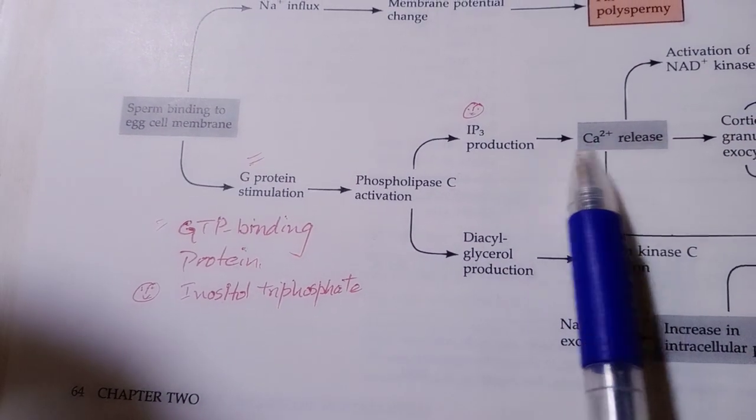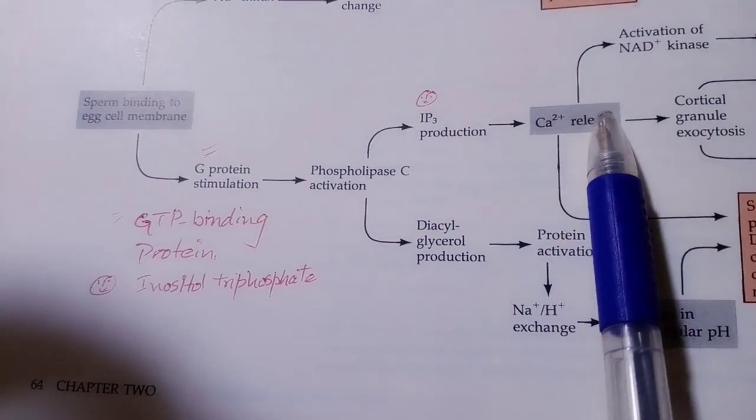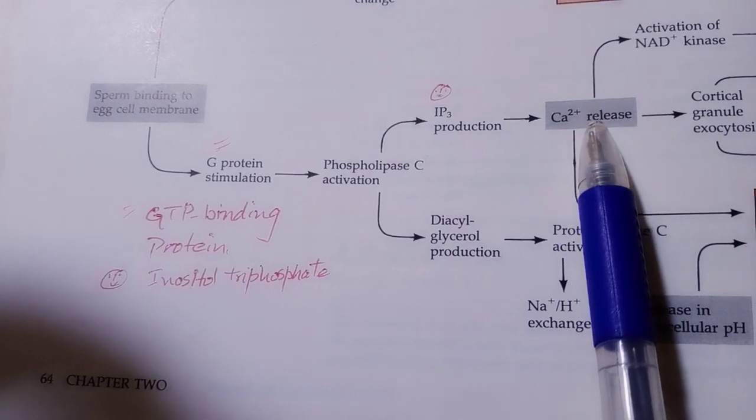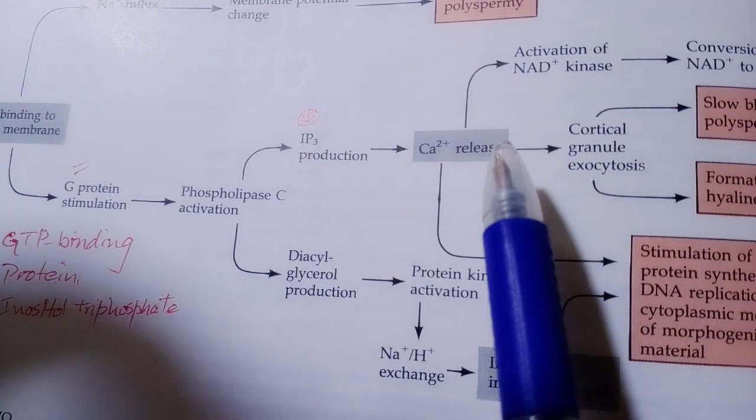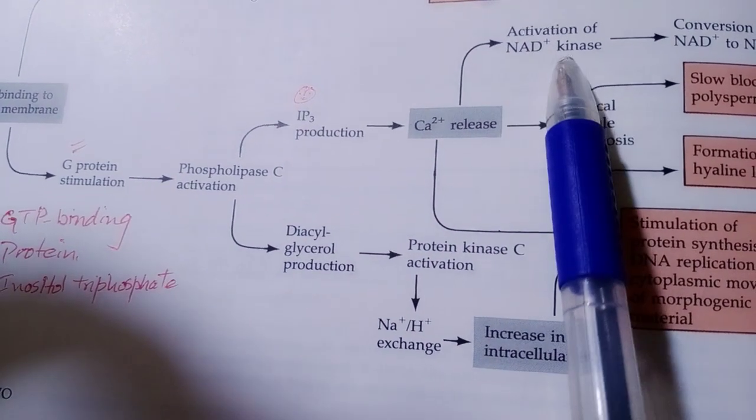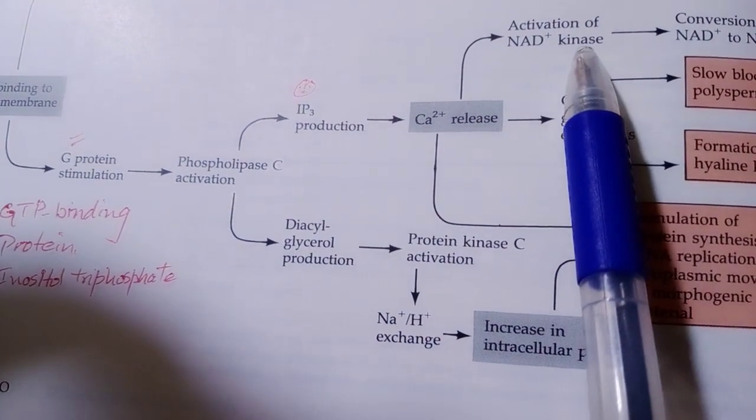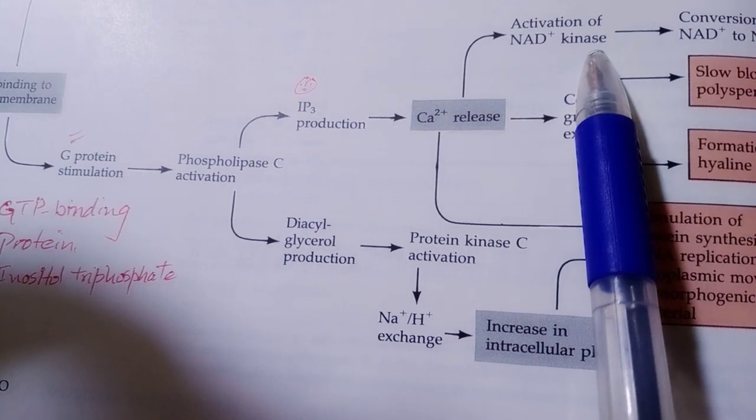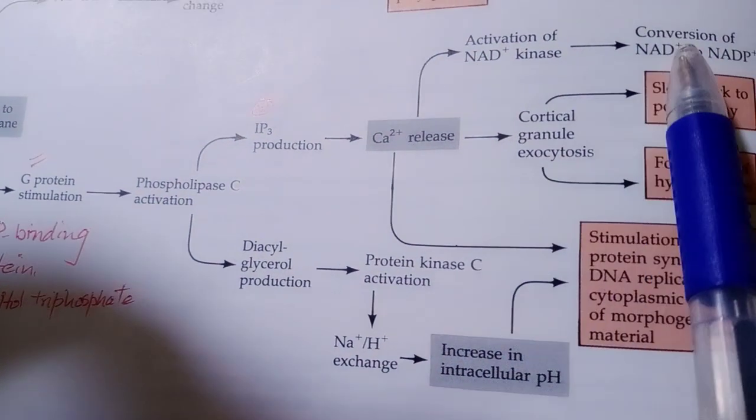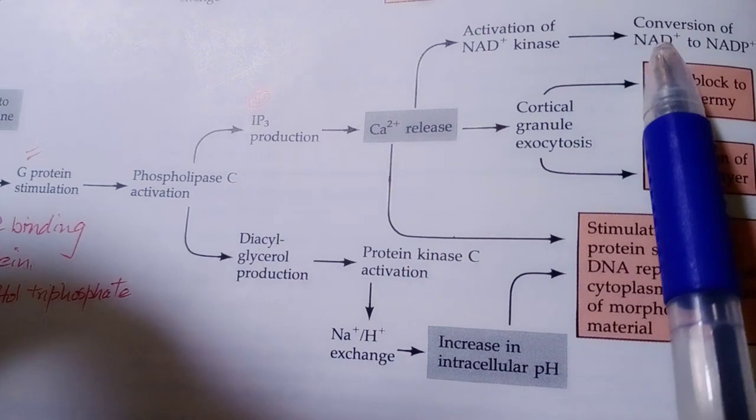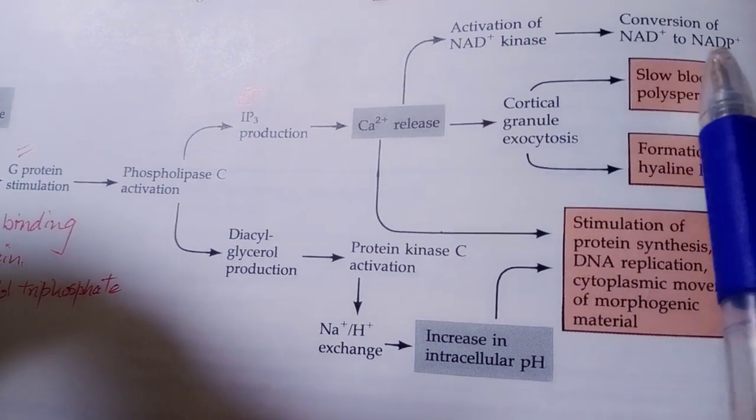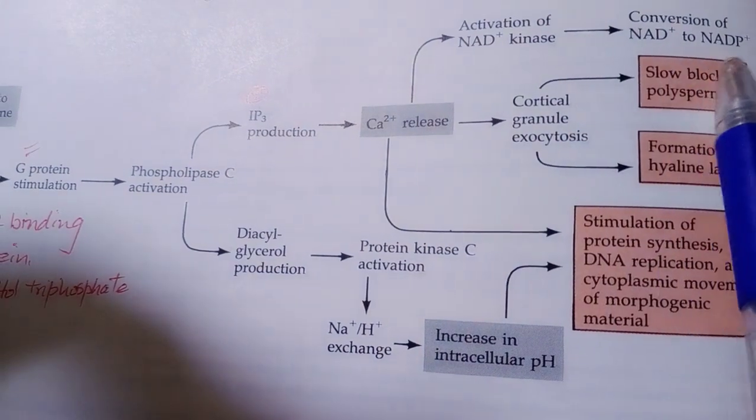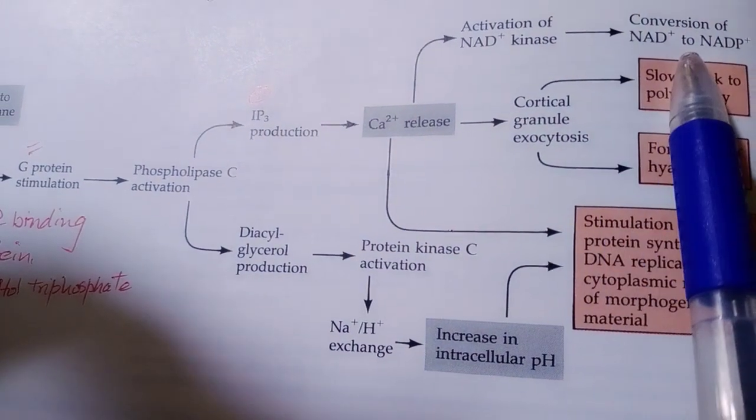Calcium ions from the endoplasmic reticulum are released. They cause the activation of nicotinamide adenine dinucleotide (NAD) kinase. This enzyme causes the conversion of NAD to NADP.